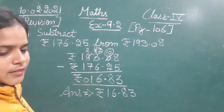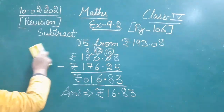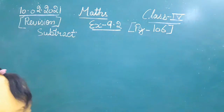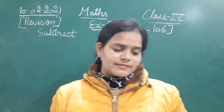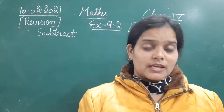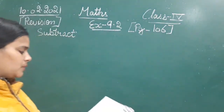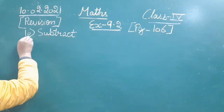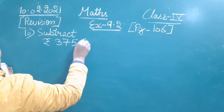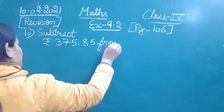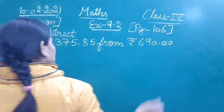Now moving to question number 10. You can pause here and note it down in your notebooks. Question number 10 is also related to subtraction. We have to subtract rupees 375 and 85 paise from rupees 690. Let's write it in column form: rupees 690 minus rupees 375 and 85 paise.